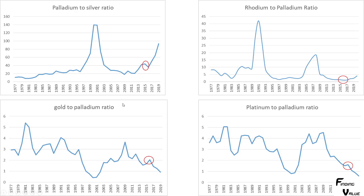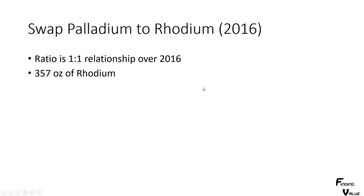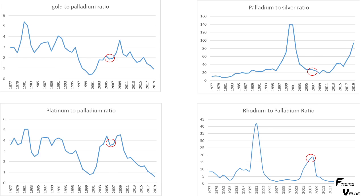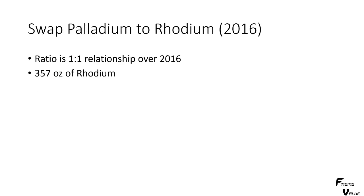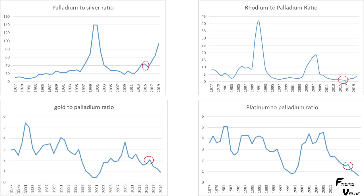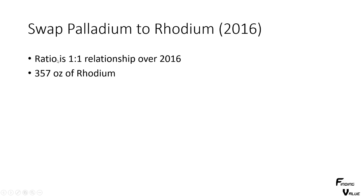So we look and in 2016, we noticed that something has changed. We've got a palladium-to-silver ratio, a rhodium-to-palladium ratio which is extremely cheap. We have a platinum-to-palladium ratio — we know that palladium is getting expensive to platinum — and we have a gold-to-palladium ratio that's kind of fairly valued. So rhodium to palladium is extremely cheap in 2016. And if you look, rhodium was cheap to palladium, rhodium is cheap to gold, rhodium is cheap to platinum, and rhodium is cheap to silver. So we want to definitely do our swap to rhodium. We do our swap to rhodium and it's a relationship of one to one at 2016, so we swap all of our palladium to rhodium. We have 357 ounces of rhodium.